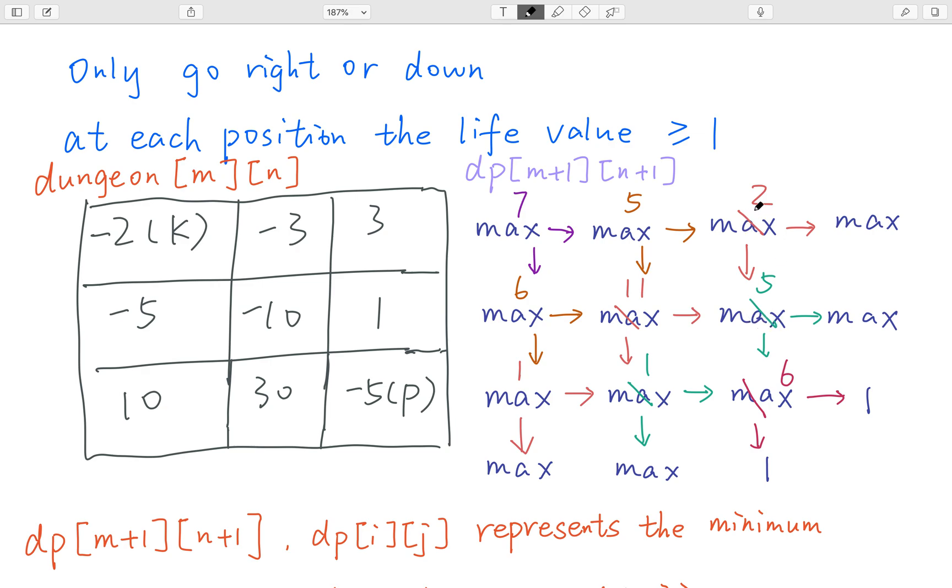Let's see this example. I also choose the minimum from its below and its right. I get a 5. And this place is a positive 3. So I can just minus the 3. Because when I reach here, my health point will be increased by 3. So I do not need this 3. So I minus it. So I get 2. So on and so forth.